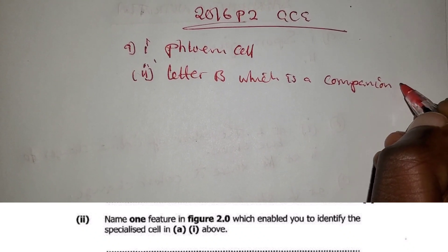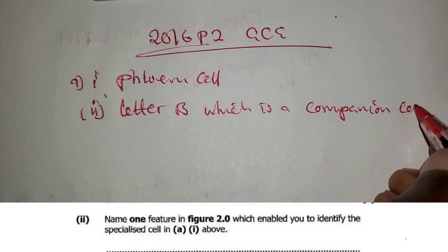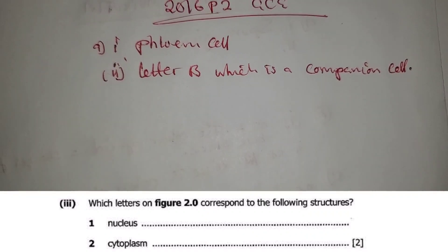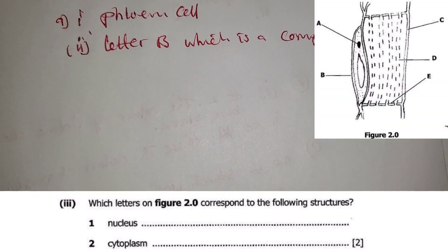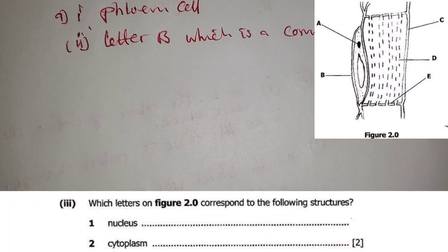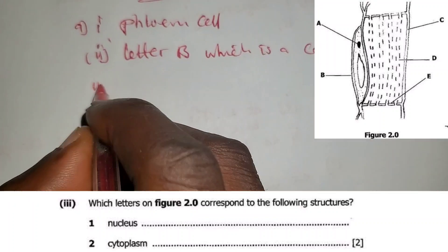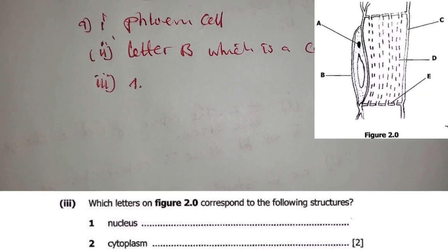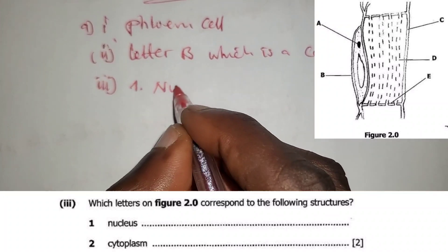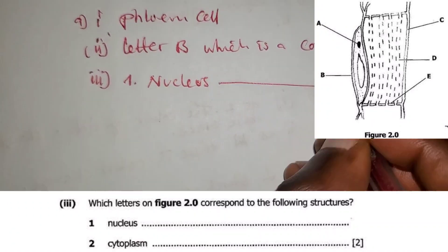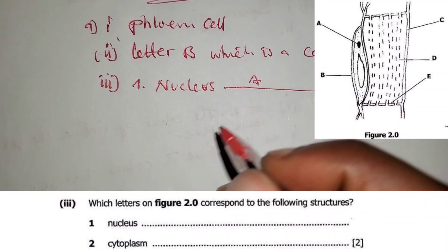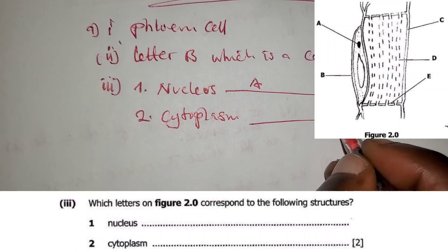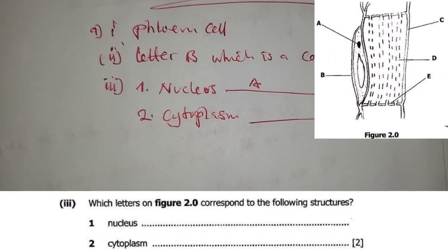The companion cell is letter B. The next question: which letters on Figure 2.0 correspond to the following structures? Number one: nucleus. Number two: cytoplasm. The nucleus is A.